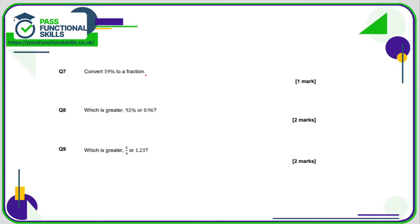59% to a fraction. Well remember that percent means out of 100. So 59% means 59 out of 100. So 59/100. Can this fraction be simplified? And the answer is no it can't. There's no number that both 59 and 100 can be divided by.